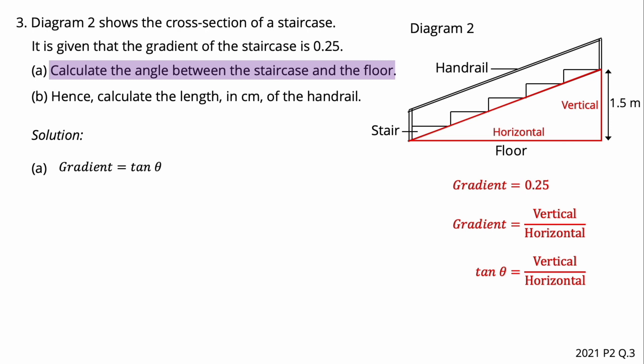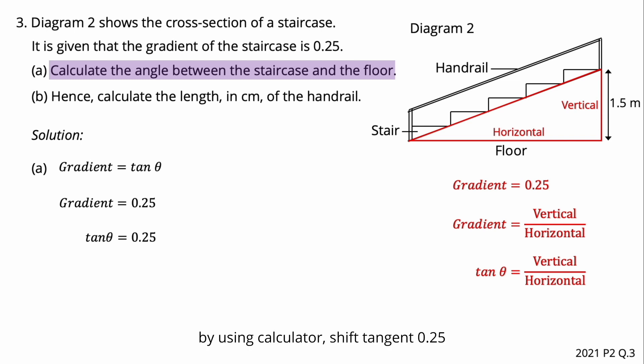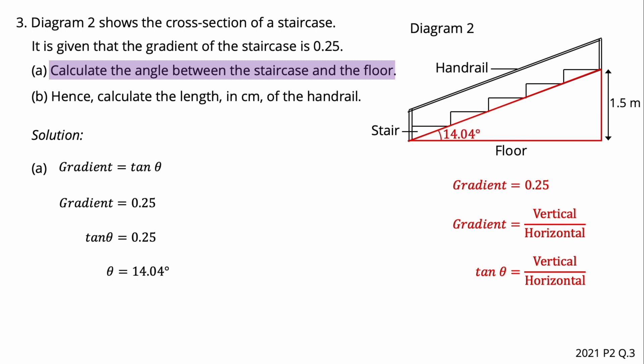Gradient is equal to tangent theta. Therefore, tangent theta equals 0.25. By using a calculator, shift tangent 0.25 gives the angle between the staircase and the floor as 14.04 degrees.